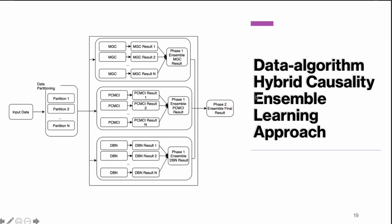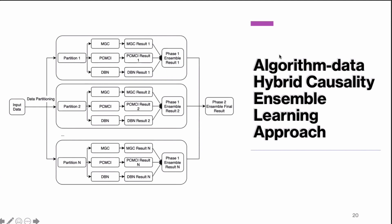For the data-algorithm hybrid ensemble, we first partition the data, feed the partitioned data into different data-driven methods to get phase one results via data ensemble, then assemble those phase one results together. For the algorithm-data hybrid ensemble, we first perform algorithm ensemble on each data partition in phase one, then use those results for the phase two ensemble.